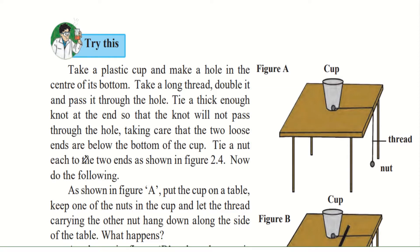Tie a knot to each of the two loose ends as shown in the figure. As shown in figure A, put the cup on the table, keep one nut in the cup, and let the thread carrying the other nut hang down along the side of the table. Both nuts are the same, and you will see that the hanging nut just hangs down at the side.